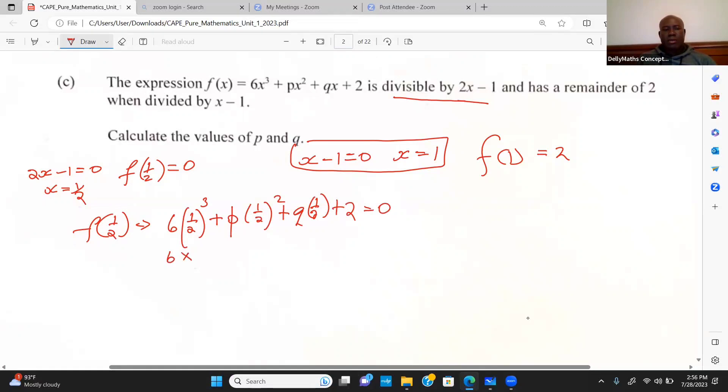Let's continue. 6 times a half raised to the third is going to be 1 eighth. Plus p times a half squared is 1 quarter. Plus q over 2, which is a half q, plus 2, and all of this is equal to 0. If I should cancel the 6, I'll have 3 over 4 for the first term.